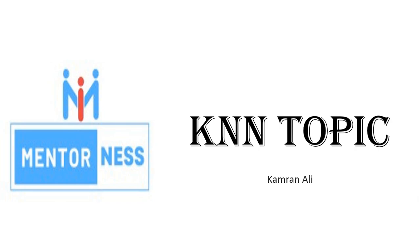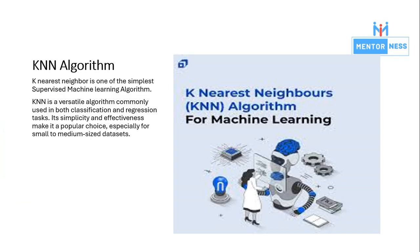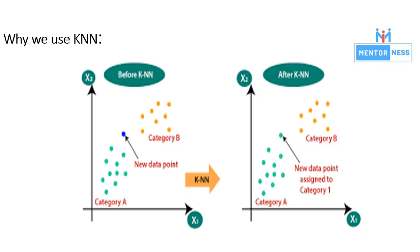Hello, I am Kamran Ali. The topic assigned for me was KNN. I'll cover what is KNN and its classification and regression. KNN, K-Nearest Neighbors, is one of the simplest supervised machine learning algorithms. KNN is a versatile algorithm commonly used in both classification and regression tasks. Its simplicity and effectiveness make it a popular choice, especially for small to medium-size datasets.